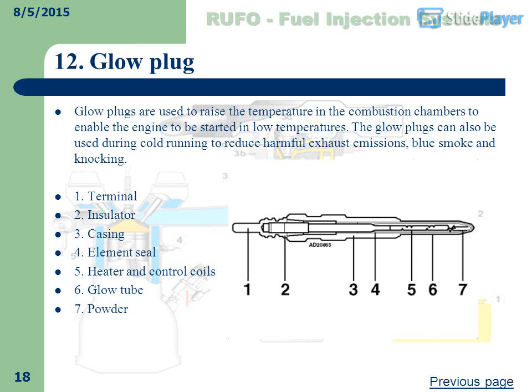Glow Plug: Glow plugs are used to raise the temperature in the combustion chambers to enable the engine to be started in low temperatures. They can also be used during cold running to reduce harmful exhaust emissions, blue smoke, and knocking. Components: terminal, insulator, casing, element seal, heater and control coils, glow tube, and powder.